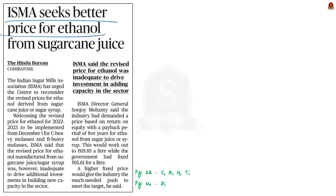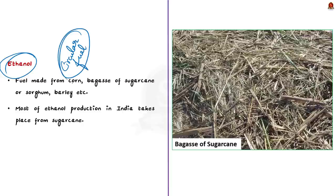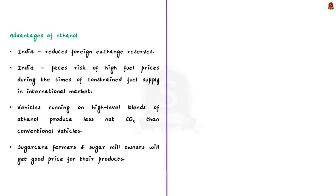This article reports about the Indian Sugar Mills Association's proposal to the union government to revise the price of ethanol to make production more remunerative to mill owners. Why is ethanol production given so much importance nowadays? The answer lies in its growing importance as a circular fuel. Ethanol is a fuel made from corn or other plant materials — including bagasse of sugarcane, sorghum, barley, etc. Most ethanol production in India takes place from sugarcane-related compounds. Since ethanol is made from the remains of food crops, it can be termed a circular fuel, and also a perfect example of the energy-from-waste concept.